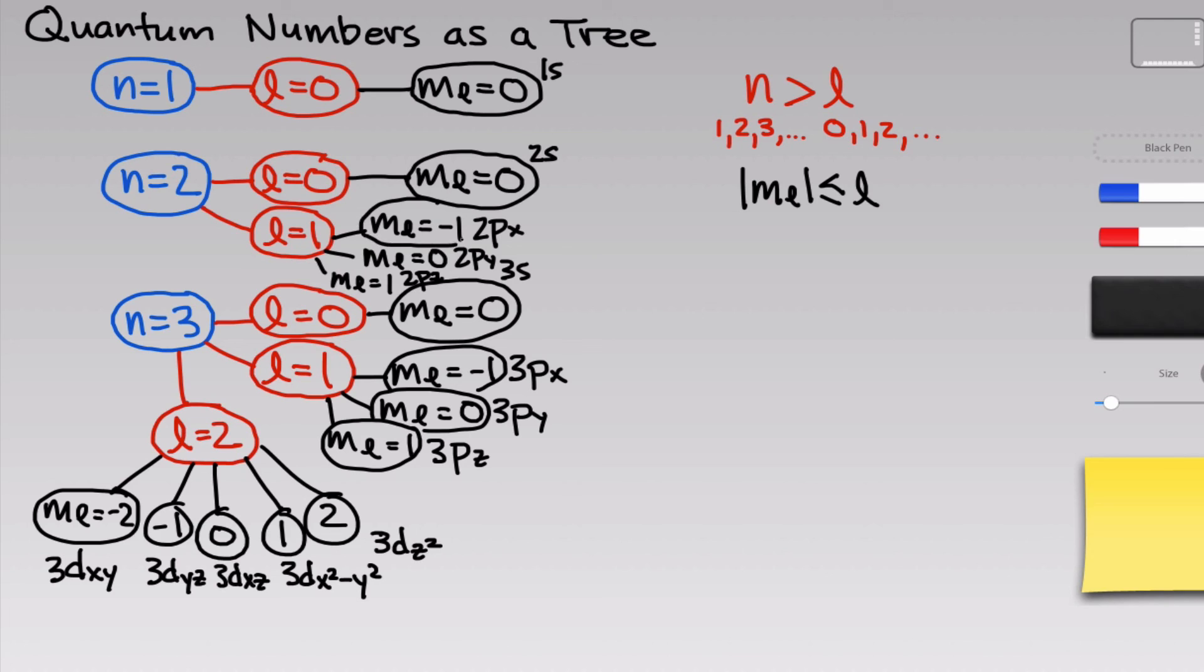So hopefully this tree format helps you see that we can systematically generate the possible orbitals within a shell by thinking about the rules that govern the quantum numbers, specifically this idea that n must be greater than l and that the absolute value of m sub-l must be less than or equal to l.